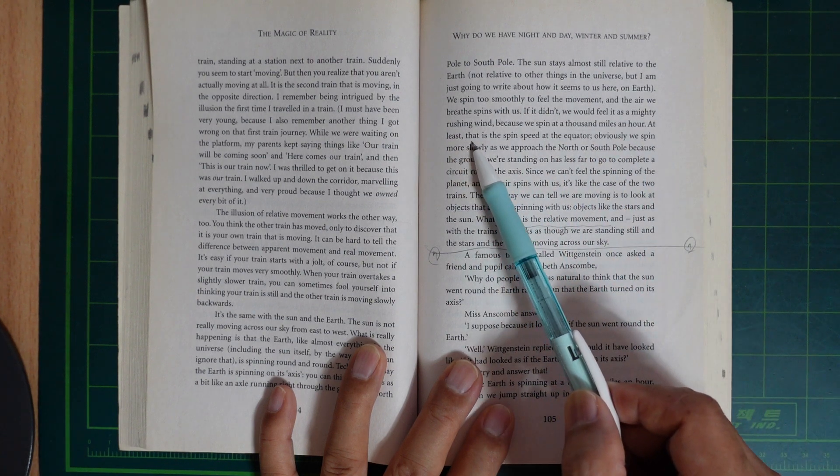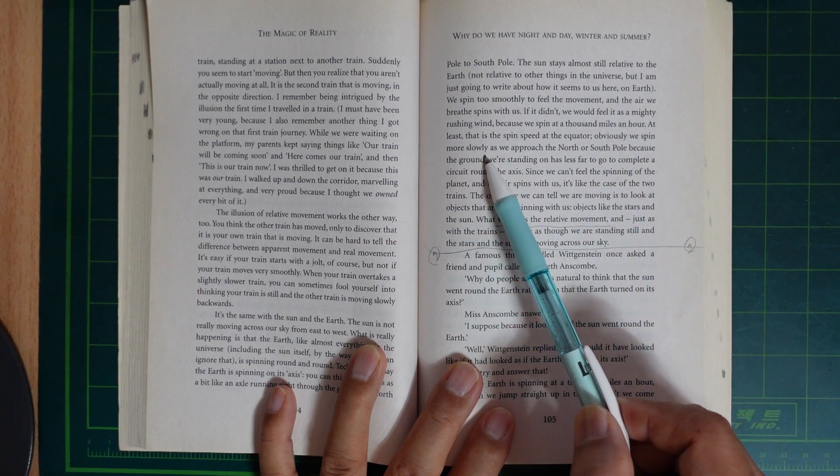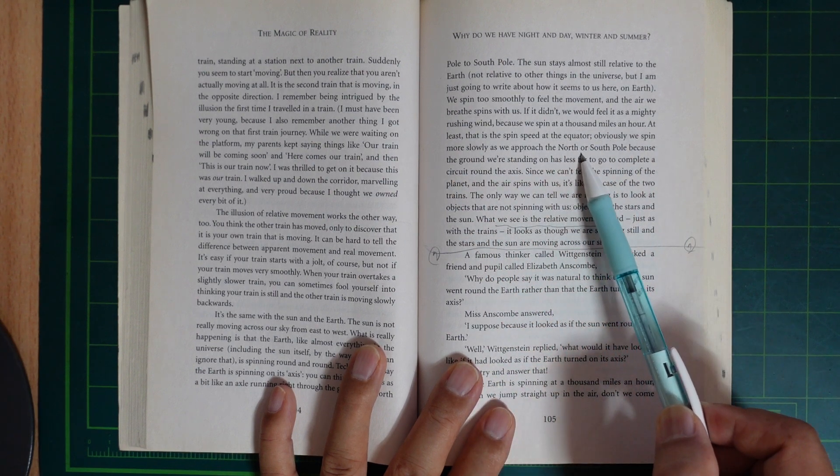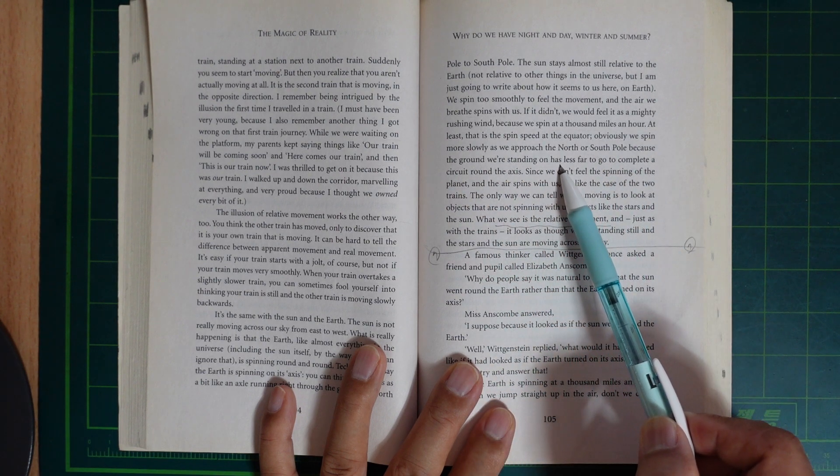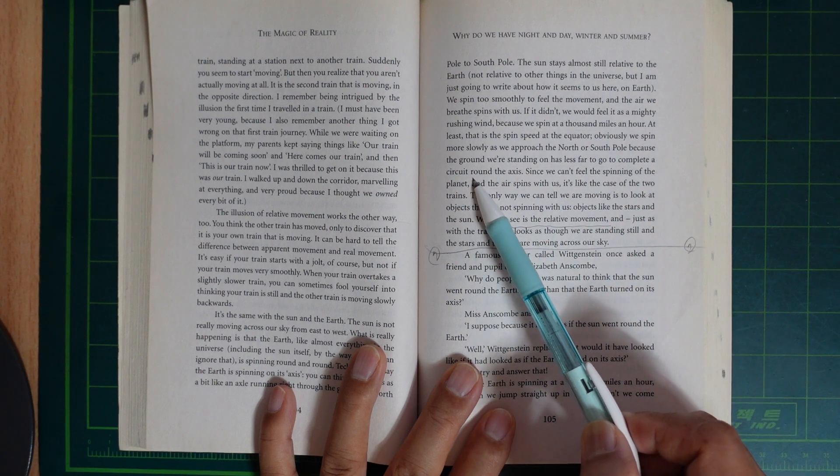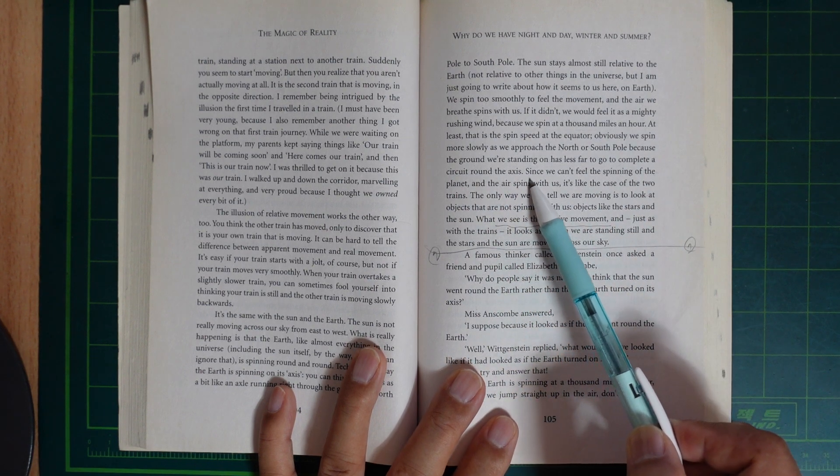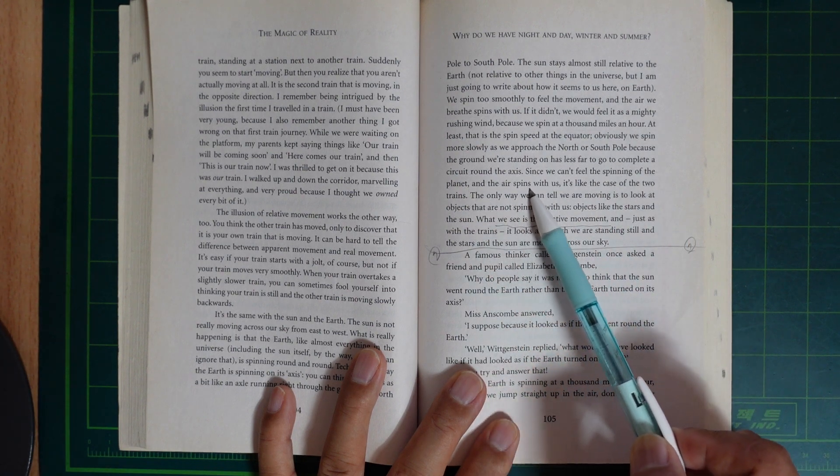At least, that's the spin speed at the equator. Obviously, we spin more slowly as we approach the north or south pole, because the ground you are standing on has less far to go to complete a circuit round the axis. Since we can't feel the spinning of the planet, and the air spins with us, it's like the case of the two trains.